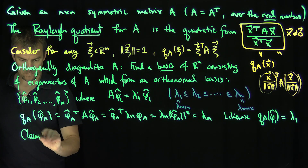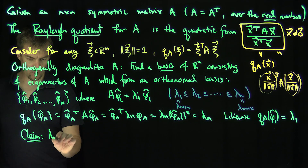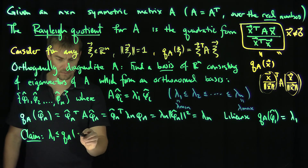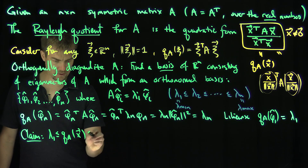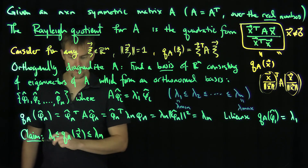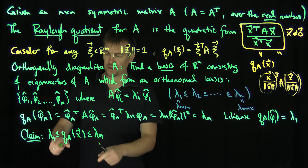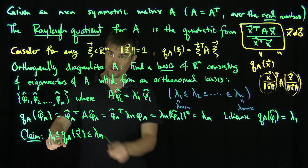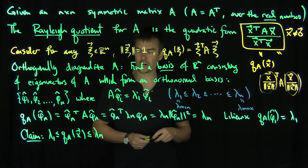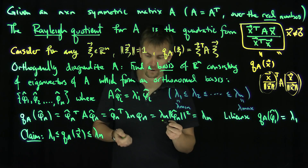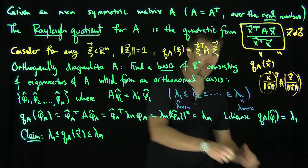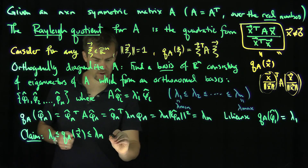More precisely, we claim: λ₁ ≤ QA(x) ≤ λₙ for any non-zero vector x. In other words, this Rayleigh quotient is a bounded function, and it attains its minimum value λ₁ and its maximum value λₙ. To prove this, we write any vector x in its orthonormal eigenvector basis.